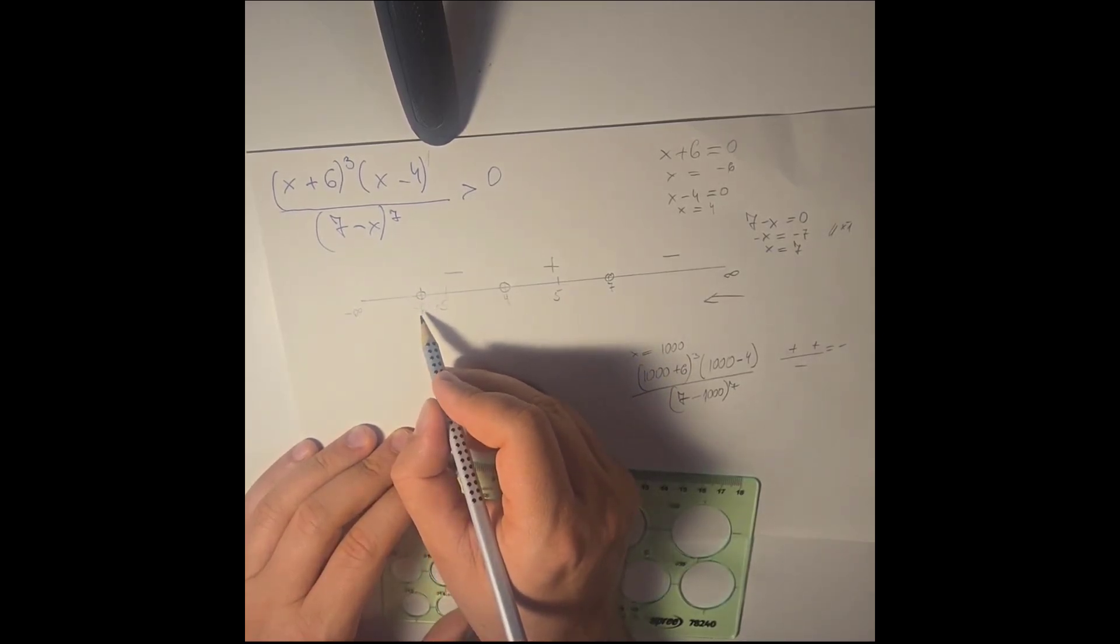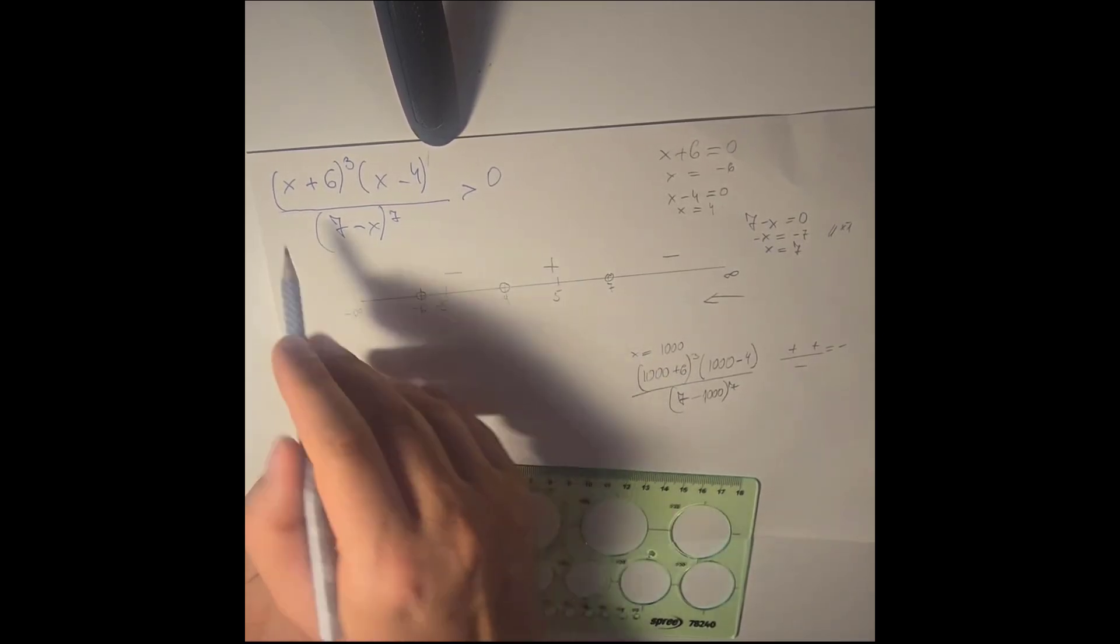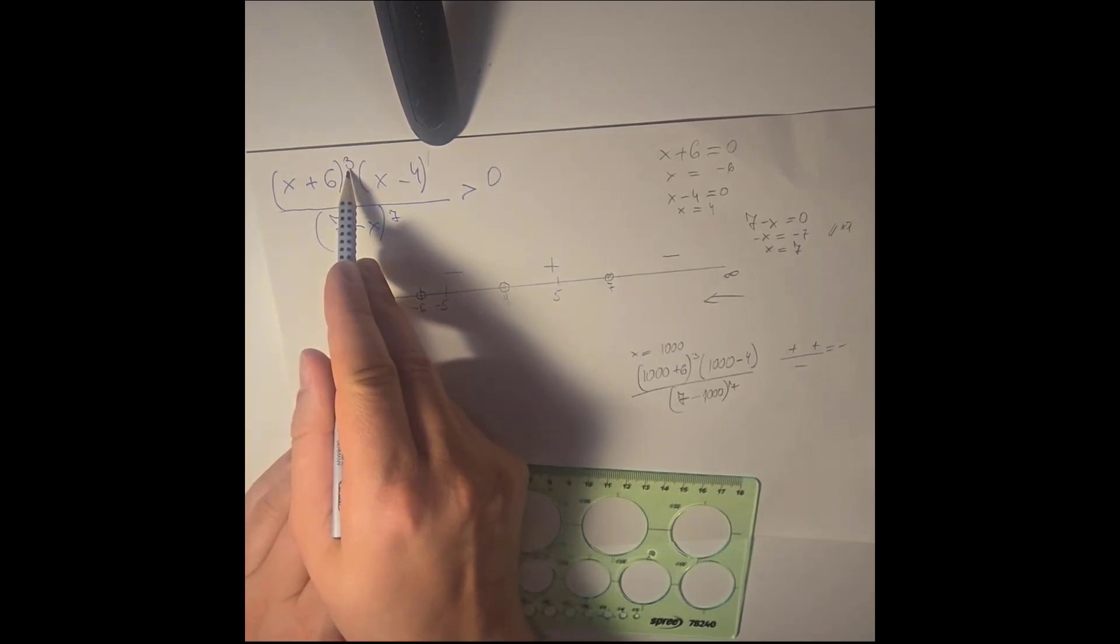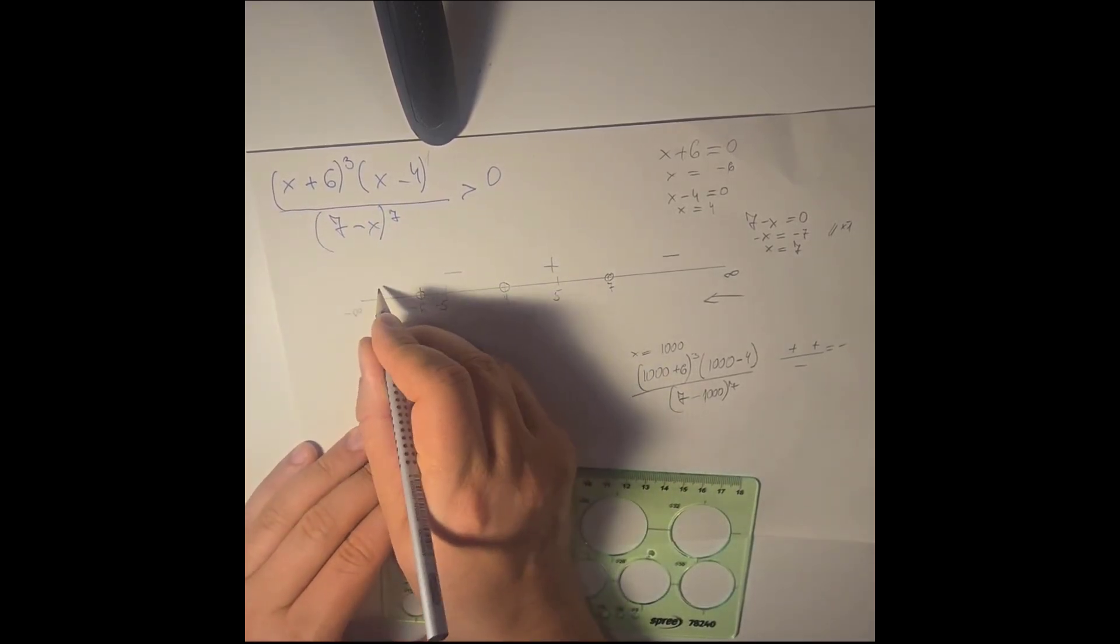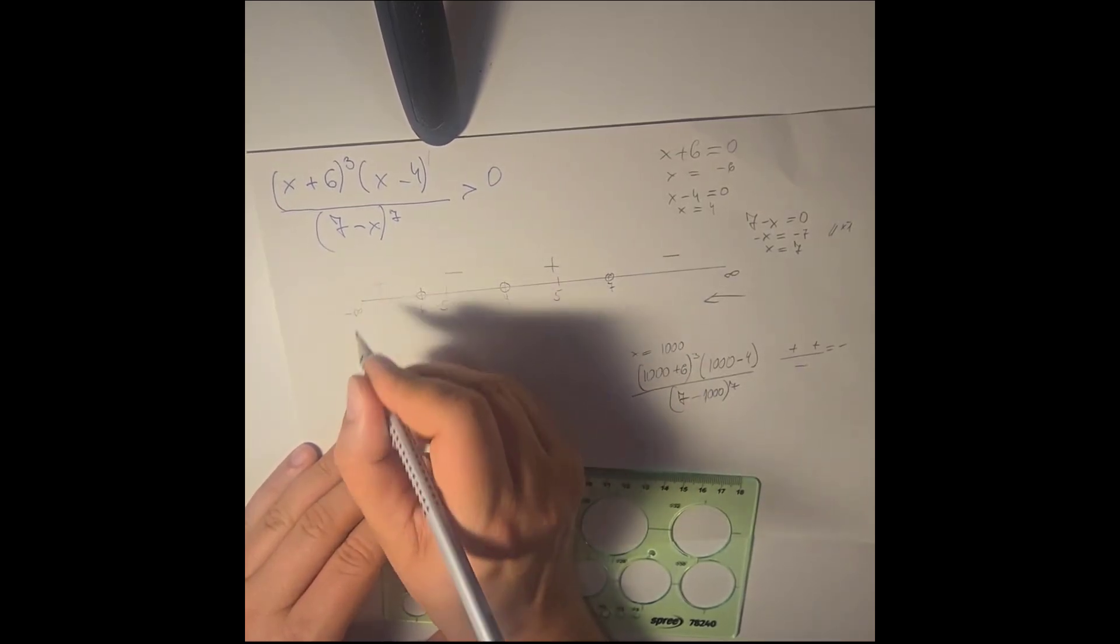Then we go to minus 6. Minus 6, we took it from here. It is a 3. 3 is an odd number. So we change again. And from minus we take plus.